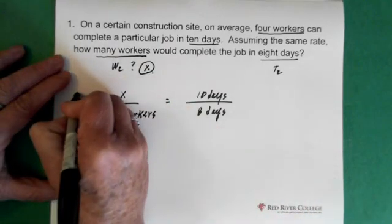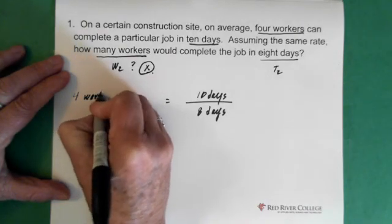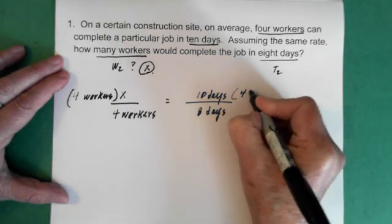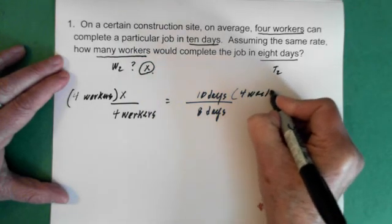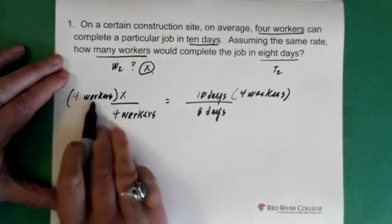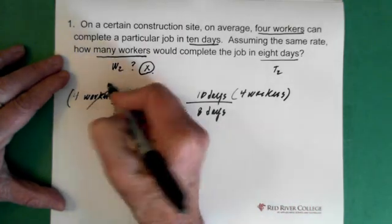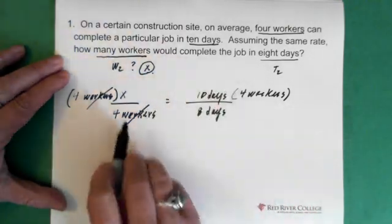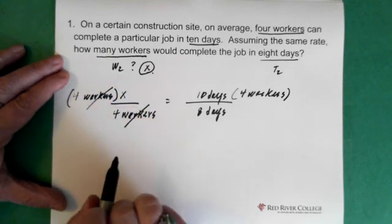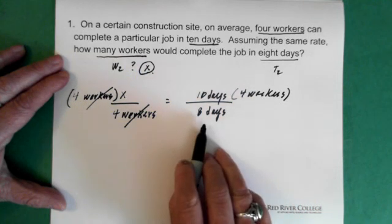So we multiply on this side by 4 workers, okay? And we multiply on this side by the 4 workers. Notice here, the 4 workers will cancel, because 4 workers divided by 4 workers is 1. So that's gone. Now we get our unknown, okay? So the unknown number of workers is 10 days times the 4 workers divided by 8 days.